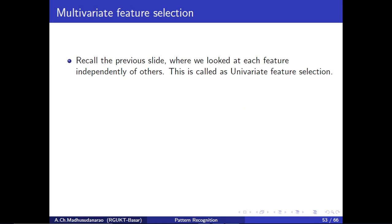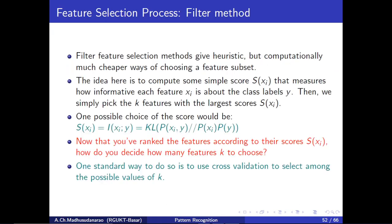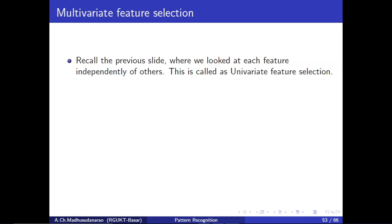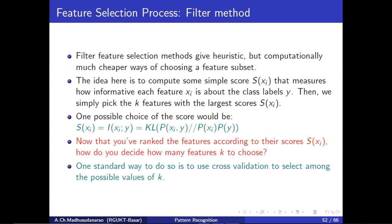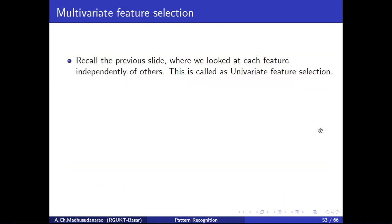And there is multivariate feature selection. In the previous slide what we have done is univariate feature selection, where we looked at each feature independently of others. We computed the score of each and every feature separately: S(X1), S(X2), up to S(Xd) — computing the score for all D features independently.